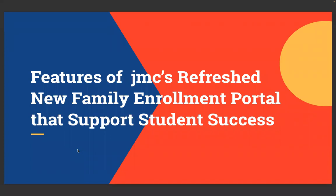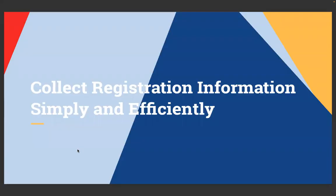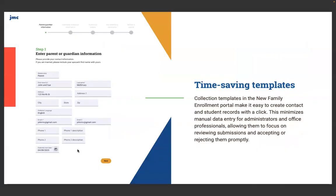Jumping into some of the features of JMC's refreshed new family enrollment portal that supports student success. Dealing with collecting registration information simply and efficiently — those of you familiar with this process might have seen our current new family enrollment page and will notice some distinct differences. Time-saving templates: collection templates in the new family enrollment portal make it easy to create contact and student records with a click. This minimizes manual entry for administrators and office professionals, allowing them to focus on reviewing submissions and accepting or rejecting them promptly.